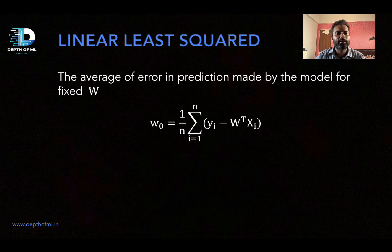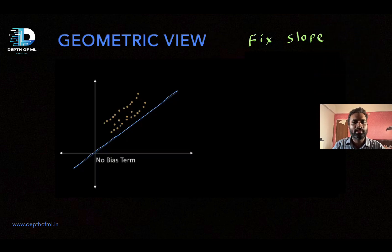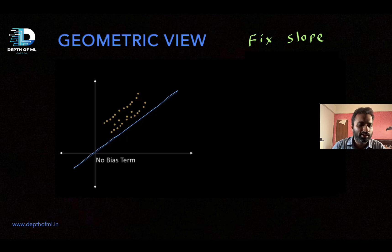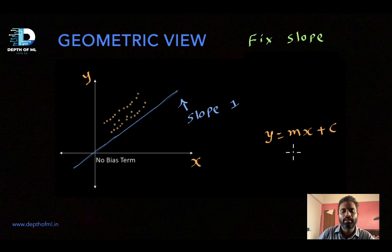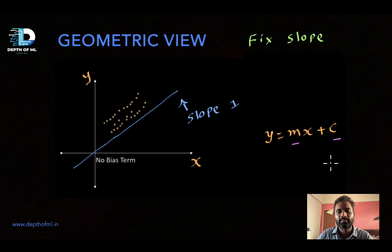So w_0 is the average error in prediction made by a model with a fixed capital W vector. Geometrically, consider data points and a fixed-slope line. For a linear regression problem, we are learning y = mx + c, with two parameters m and c — m corresponding to the coefficient and c as the bias term. For now, let's consider m as fixed, say m = 1.